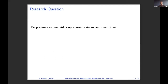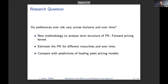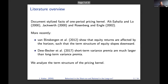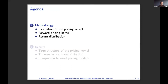The research question that we're after is: do preferences over risk vary across horizons, and do these vary over time? How we'll approach this question is we develop a new methodology to analyze the term structure of the pricing kernel, and this is something we will refer to as the forward pricing kernel. For this term structure of the stochastic discount factor, we are going to compare to the predictions of many leading asset pricing models.